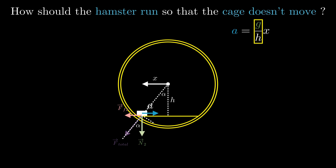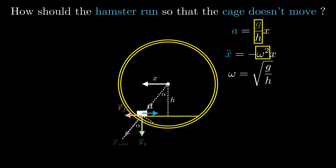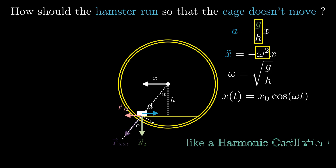Whenever we have acceleration directly proportional and opposite to displacement, we get harmonic motion. The harmonic motion equation states that the second-order derivative of displacement equals minus omega squared times displacement. Here, the second-order derivative of displacement is the acceleration, and the minus sign reflects that the acceleration is always opposite to the displacement. Comparing the two equations, omega squared equals g over h, so the angular frequency is the square root of g over h. If we start at one end of the platform, we can write x(t) = x₀ cos(ωt) — it's just like a harmonic oscillation.